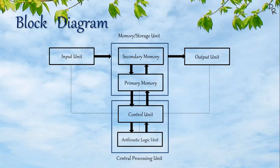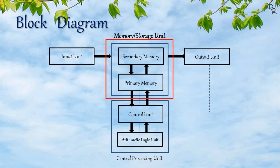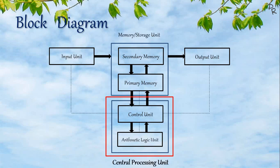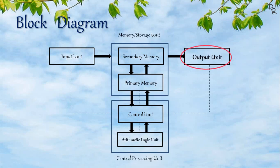We can understand all this in detail with the help of a block diagram. The block diagram of a computer is made up of four units: the input unit, the memory unit (also known as the storage unit), the central processing unit, and the output unit.